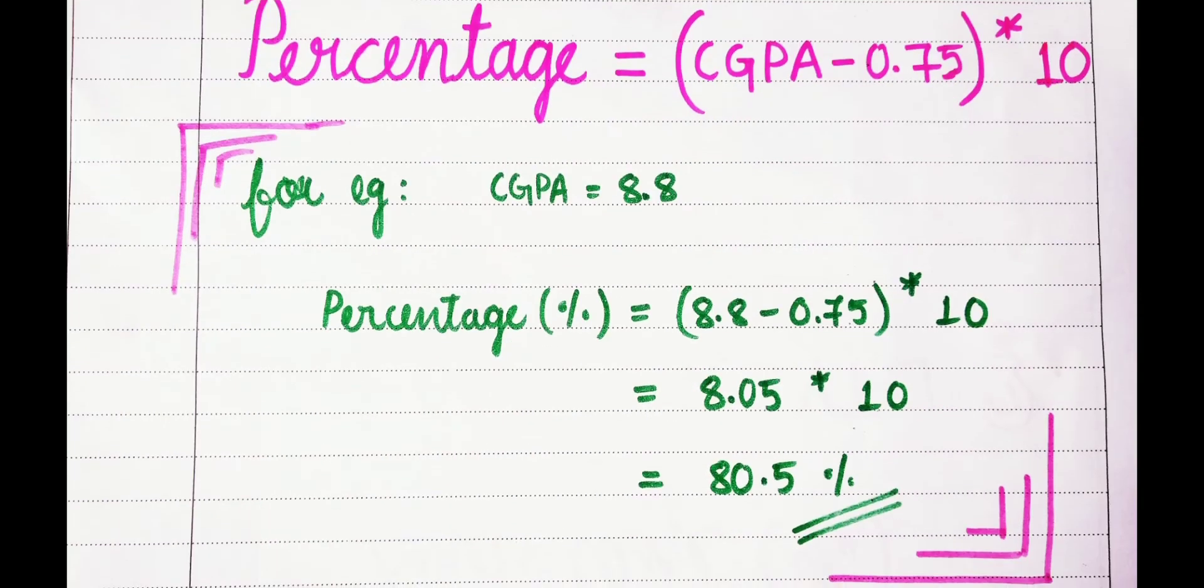So here's the formula: Percentage equals CGPA minus 0.75, whole multiplied by 10. This is the formula to convert from CGPA to percentage. Let us take an example. Suppose we take 8.8 as a CGPA.